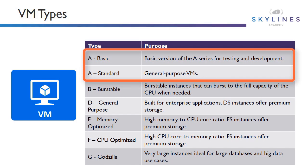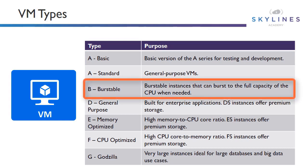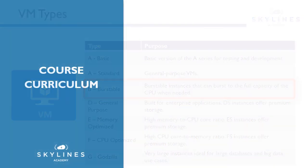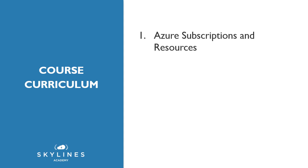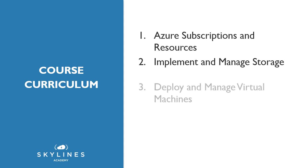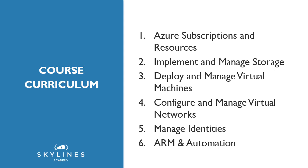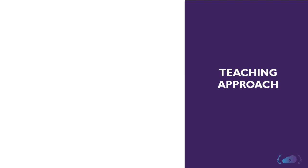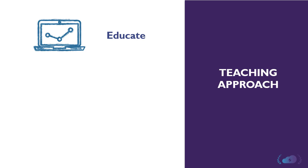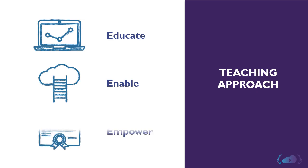At Skylines Academy, we'll guide you through a series of sections, modules, and demos to ultimately help you get certified, and learn Azure and the core fundamentals you need. The course is broken out into six sections. The first five map directly to the course curriculum: Section one, Azure Subscriptions and Resources; Section two, Implement and Manage Storage; Section three, Deploy and Manage Virtual Machines; Section four, Configure and Manage Virtual Networks; Section five, Manage Identities. We've added Section six on ARM and Automation, because those constructs appear in a lot of the other modules and we felt it needed a module all by itself. Each section includes a series of modules with lectures and demos. The lectures give you core fundamental knowledge, and the demos provide hands-on experience to empower you in the real world.